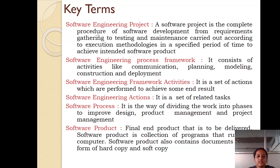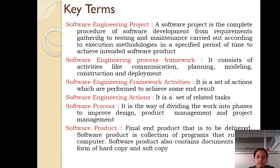The second key term is the software engineering process framework. Whenever we go for the implementation of a software, we need to follow proper steps. These proper steps are part of the framework activities and this is called a process framework. Basically it contains activities like communication, planning, modeling, construction, and deployment.